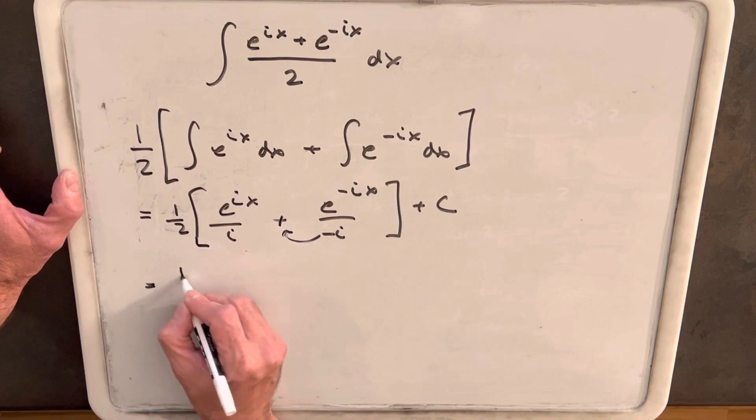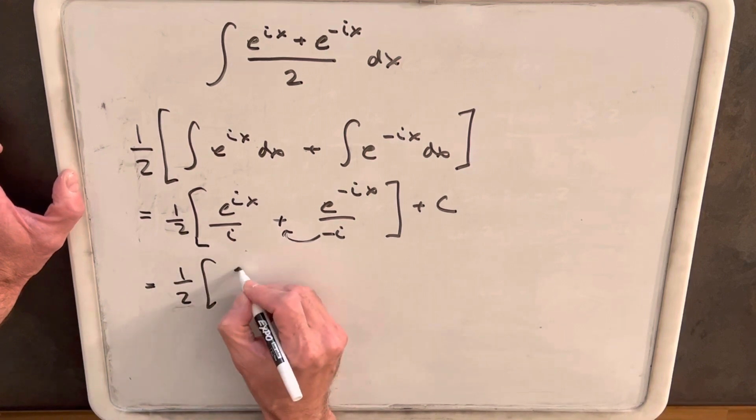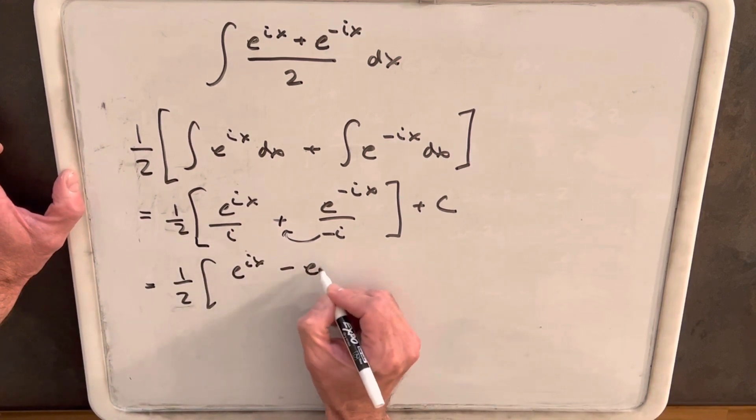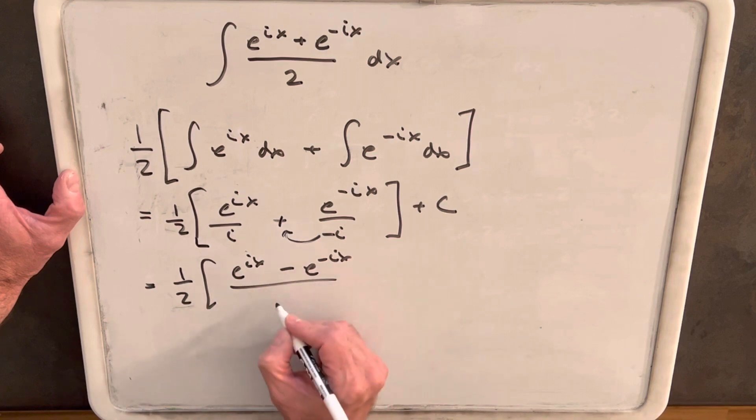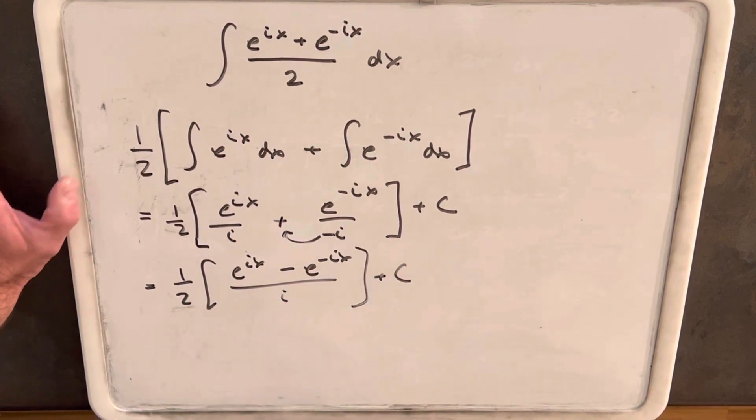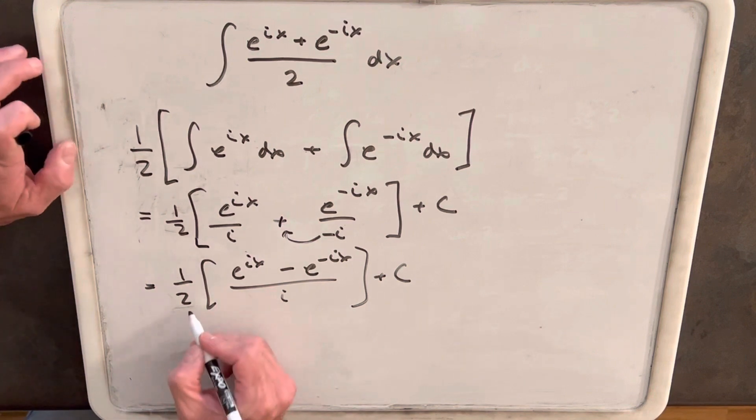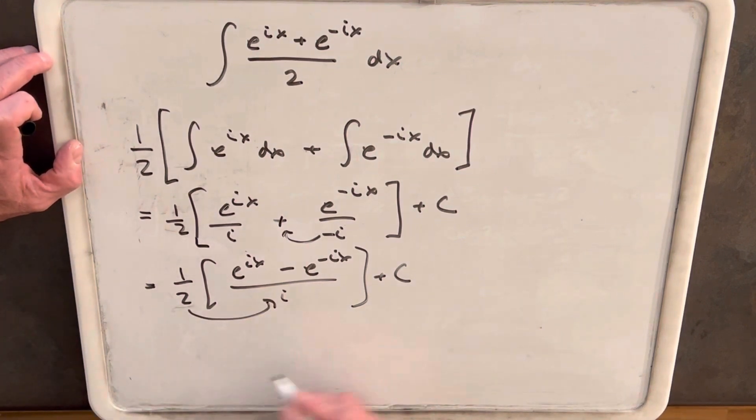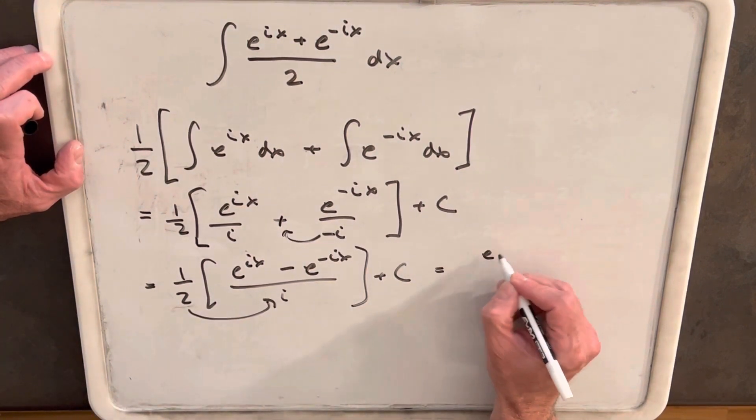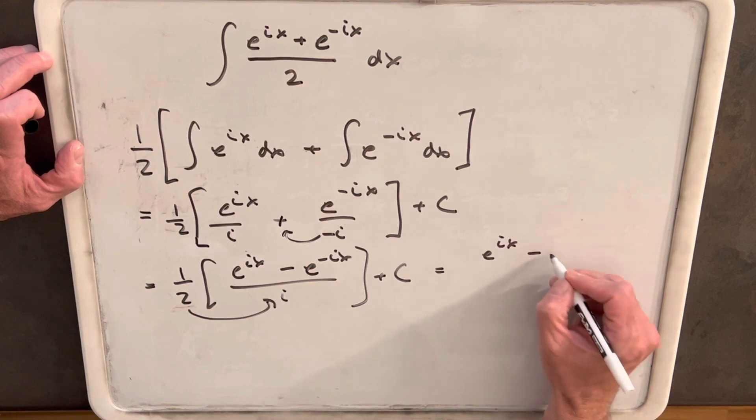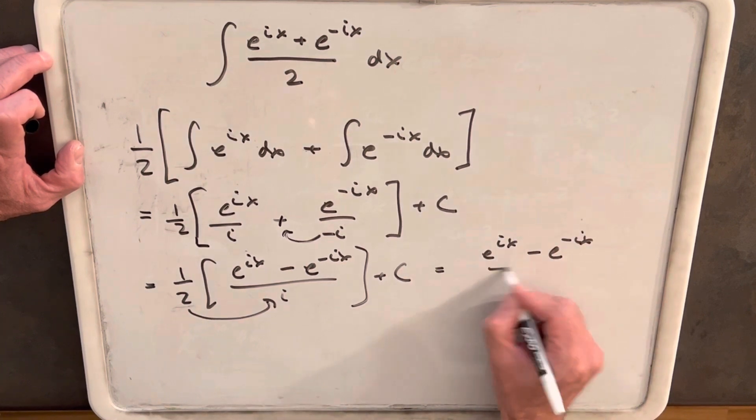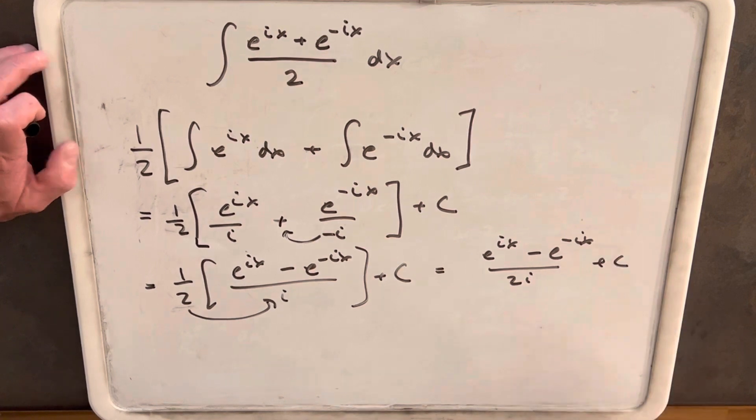So then when we're simplifying this, we'll have 1 half e to the ix minus e to the negative ix all over i. Just bring down our plus c. And then we'll get this 2 in here, multiplying that in, and we're going to have e to the ix minus e to the negative ix over 2i plus c.